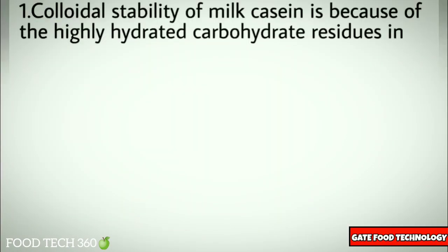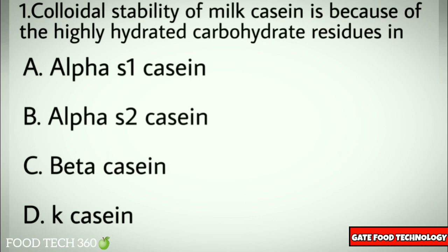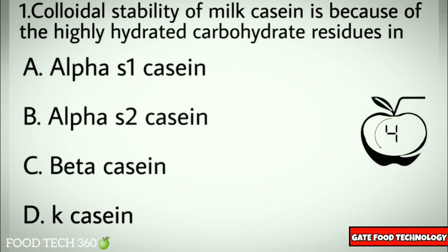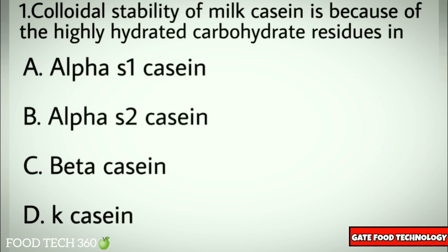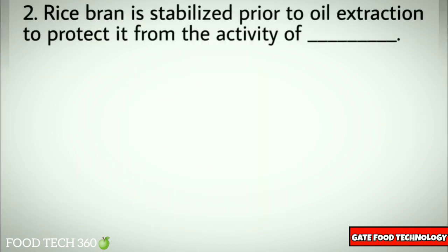Question number one: Colloidal stability of milk casein is because of the highly hydrated carbohydrate residues in — options: A) alpha-s1 casein, B) alpha-s2 casein, C) beta casein, D) k-casein. Correct answer: D) k-casein.